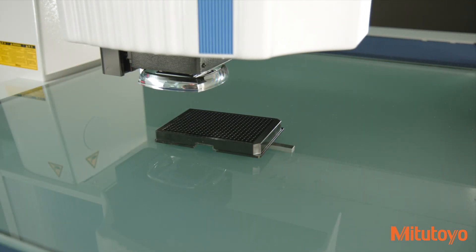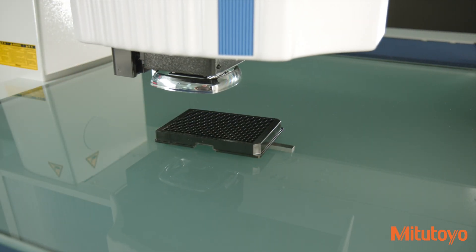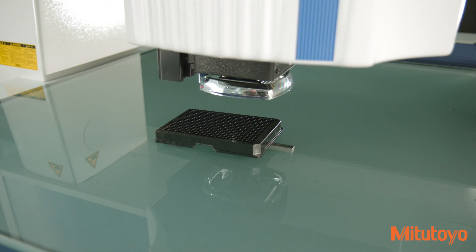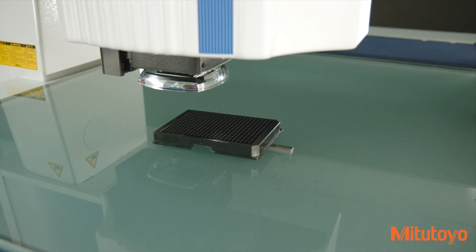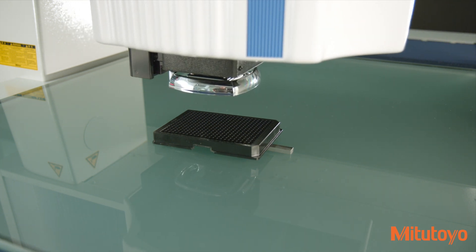Automatic tracking of warpage in the Z-axis height direction improves measurement throughput. Tracking autofocus also cuts out the hassle of focusing during manual measurement, reducing the work burden for measuring system operators.